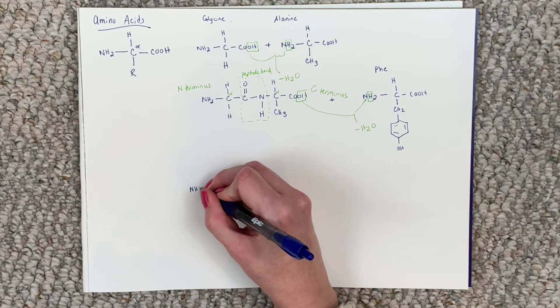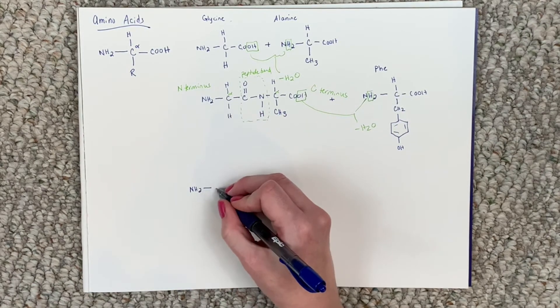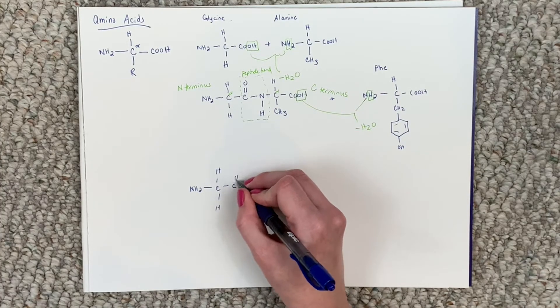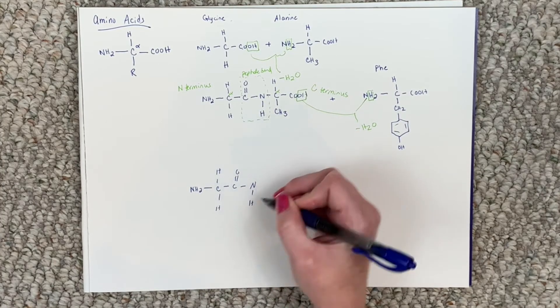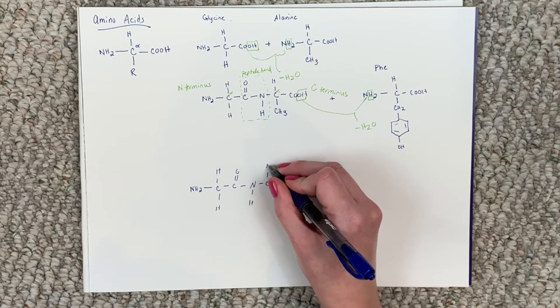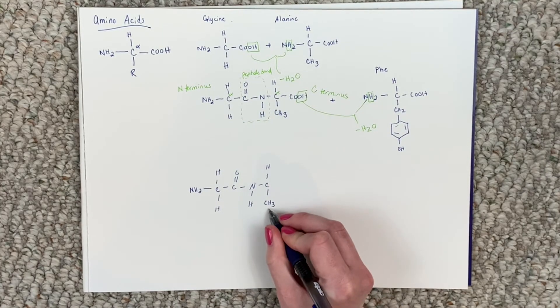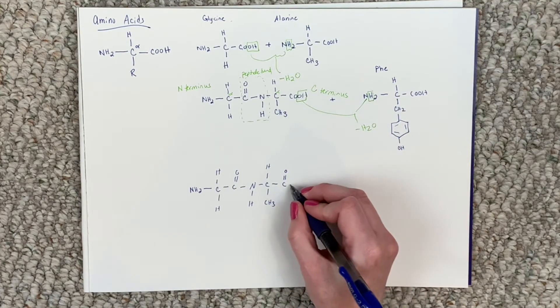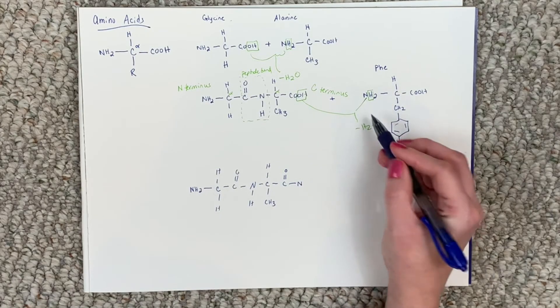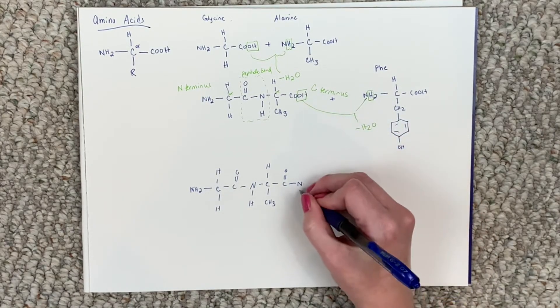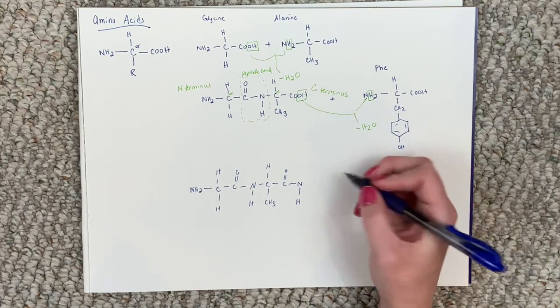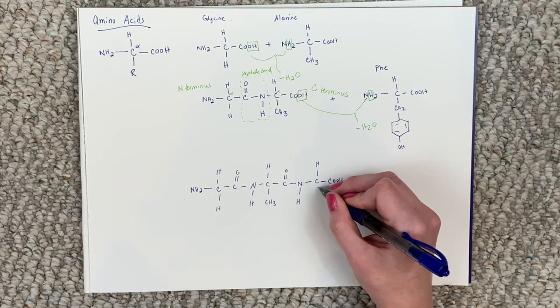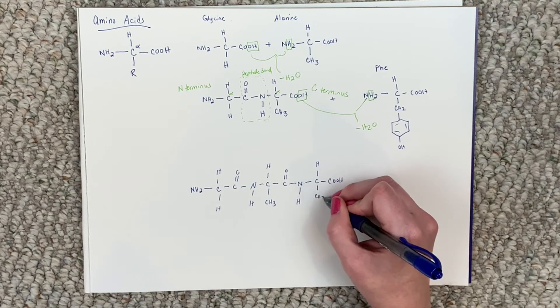So we'll start again with NH2. All right, we'll start there. NH2, a carbon, and this is going to be glycine, which forms a peptide bond to alanine. Here's the R group of alanine, right? Now we have to remember to do our peptide bond. So we take it to the nitrogen right here. These are the same, same nitrogen. This has one hydrogen now. Go to the alpha carbon of phenylalanine. And now we just need to add the side chain of phenylalanine.